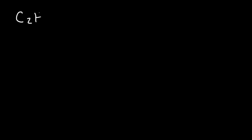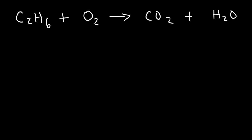Now let's work on some harder examples. Let's react ethane with oxygen gas — this one might be a little trickier than the last two, but feel free to pause the video and try it yourself. The products are CO₂ and H₂O. Let's begin by balancing the carbon atoms first. We have two on the left and one on the right, so we put a 2 in front of CO₂.